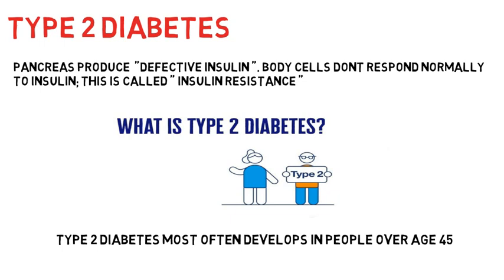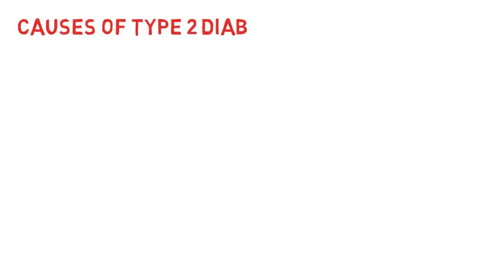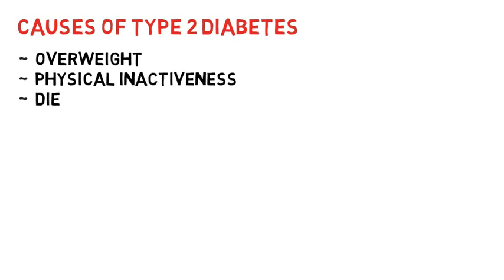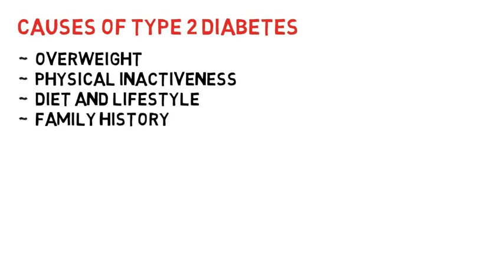Following can be the causes of type 2 diabetes. Number 1: overweight or obesity. Number 2: physical inactivity. Number 3: your diet and lifestyle habits. Number 4: family history.